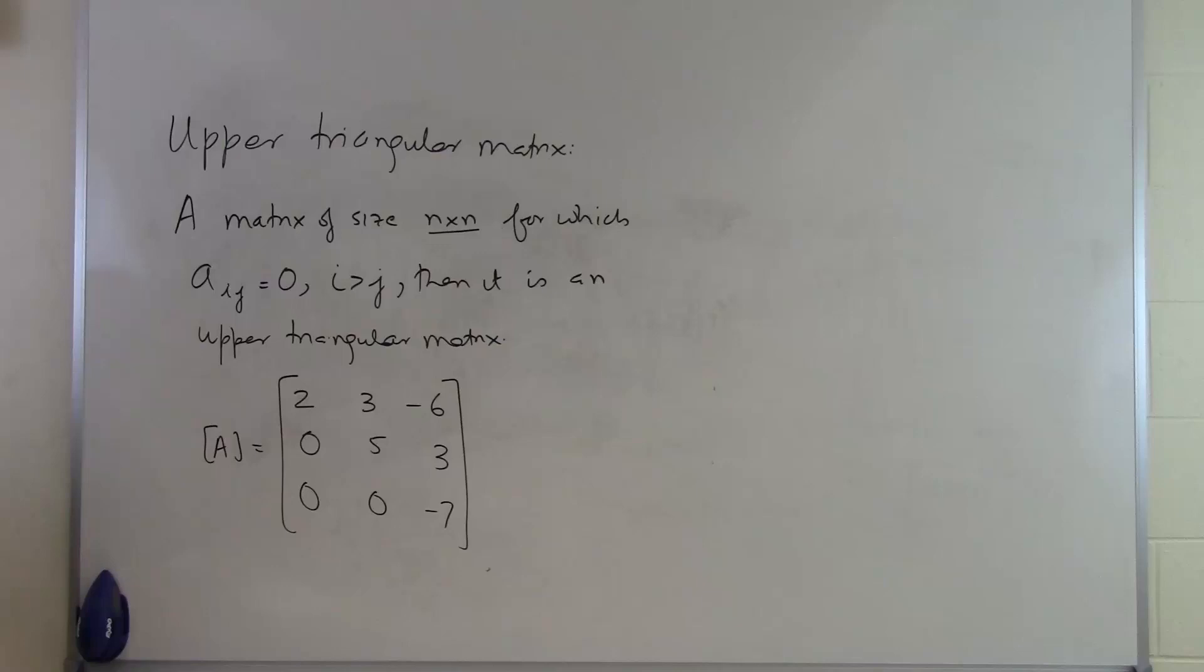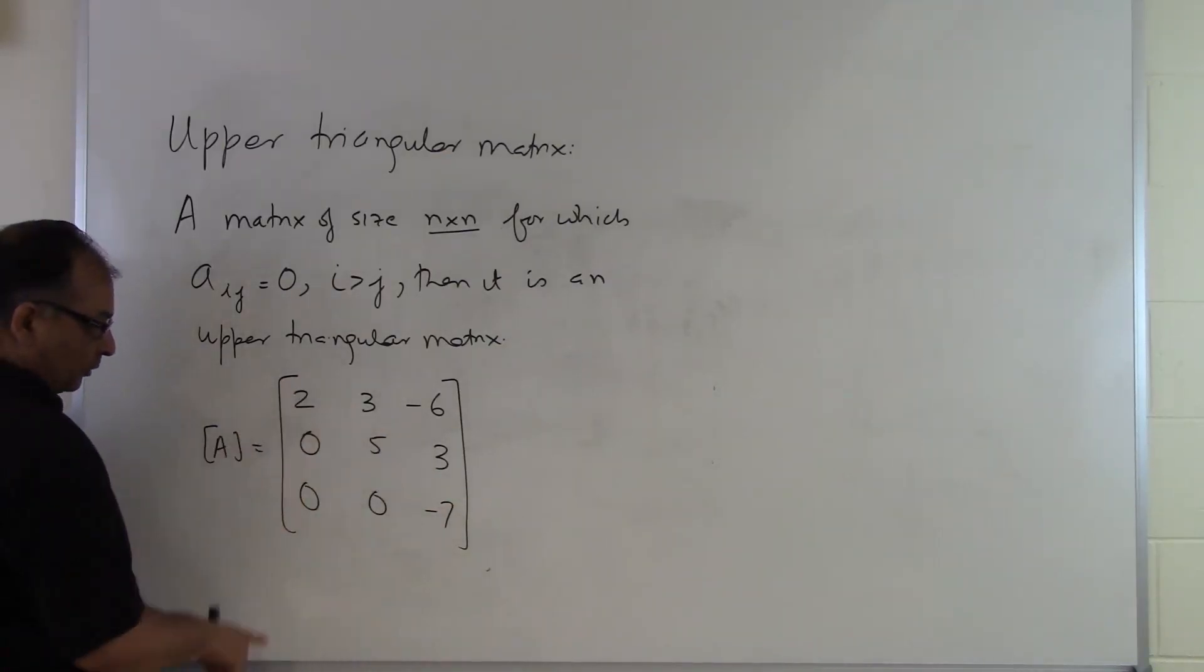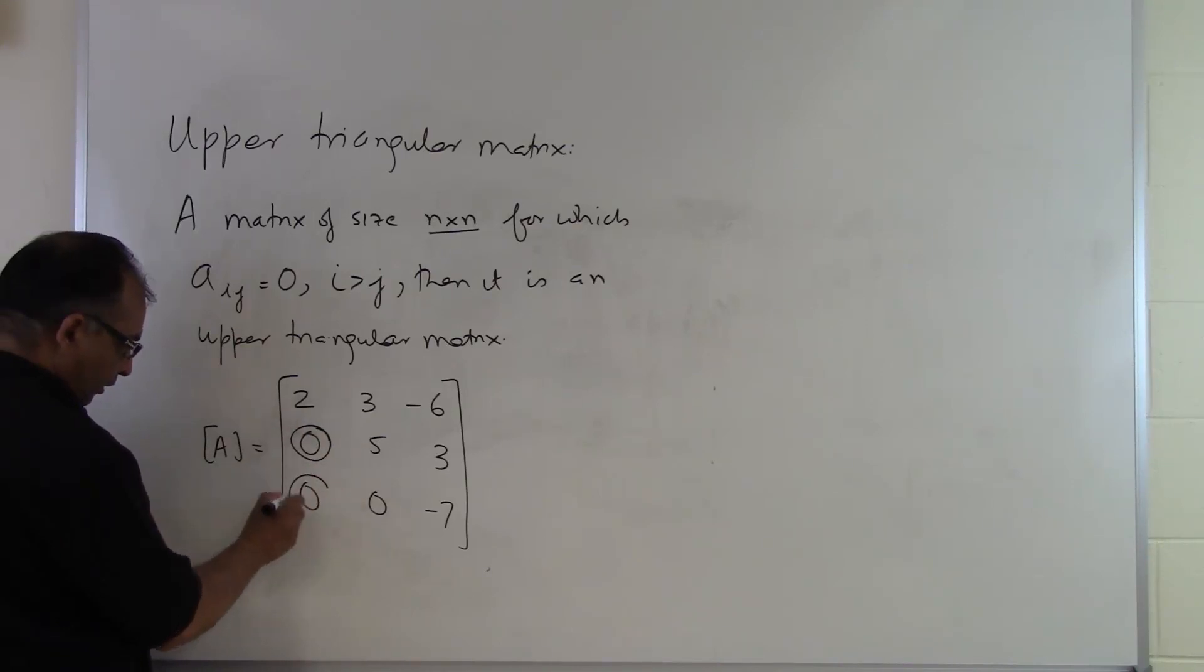So what you are finding out is that, let's suppose this is an upper triangular matrix. This is a square matrix. And you are finding out here are the 0s in the upper triangular matrix. If you look at this element, this is second row, first column.